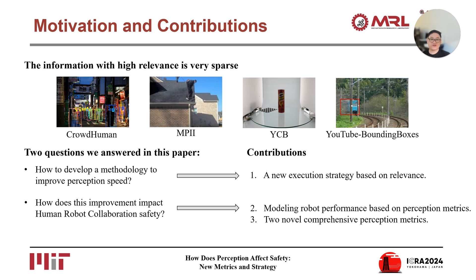This slide shows the motivation and contributions of this work. In our daily life, the information with high relevance to our goal or task is very sparse. What motivates this paper are two questions. The first one: how to improve perception speed by leveraging this sparsity based on relevance. This leads to our first contribution, a new execution strategy based on relevance. The second question is how does this improvement in perception impact human-robot collaboration safety. This leads to the other two contributions: modeling robot performance based on perception metrics and two novel comprehensive perception metrics.